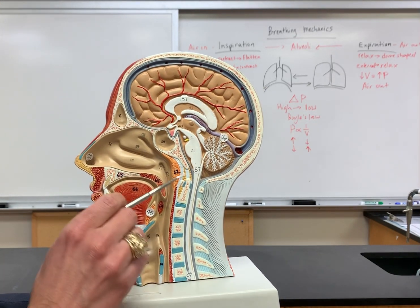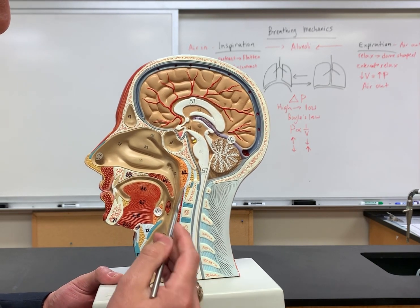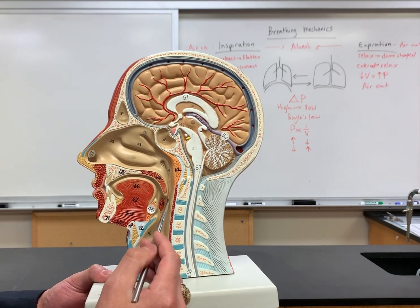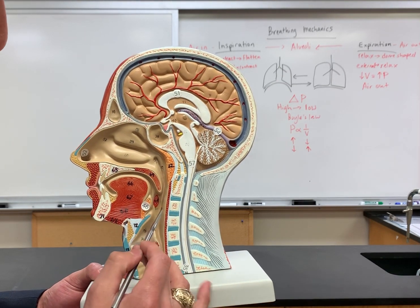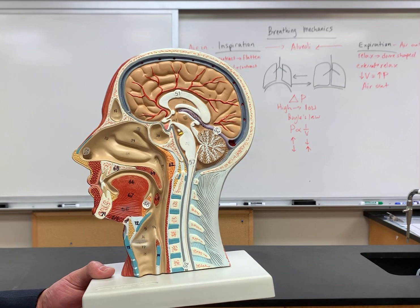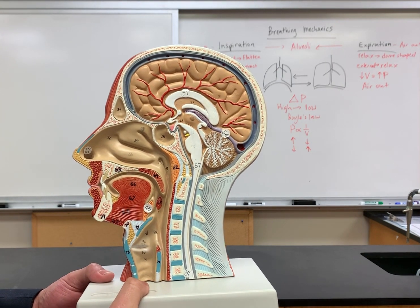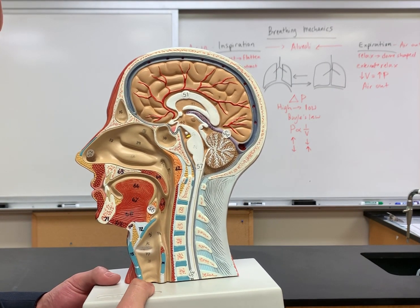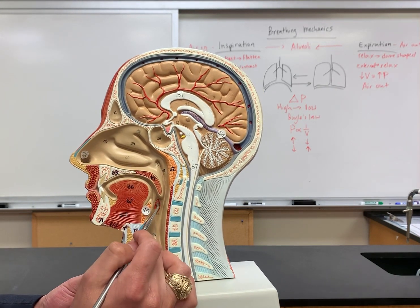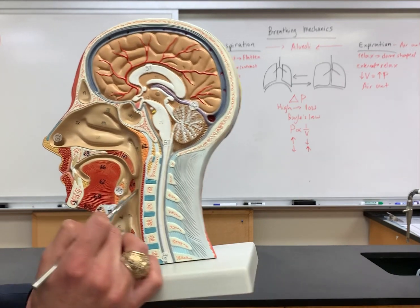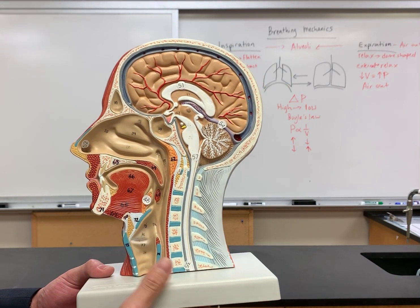We'll then go over the pharynx. The pharynx has three different regions: naso, oro, and laryngopharynx — so that's 79, 80, and 81. The next thing we'll look at are the different tonsils. Number 62 is the pharyngeal tonsil, number 65 is the palatine tonsil, and number 46 is the lingual tonsil.